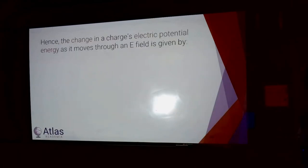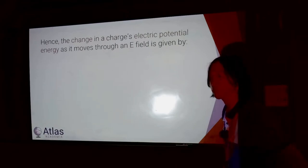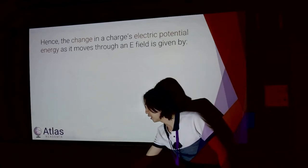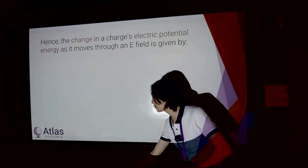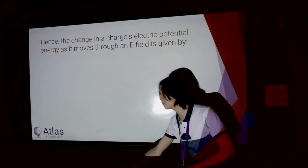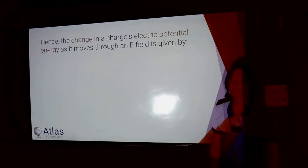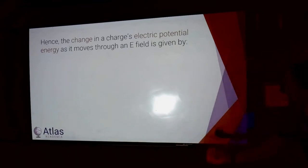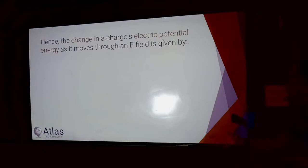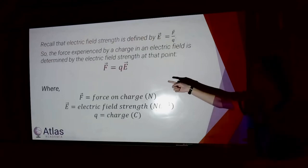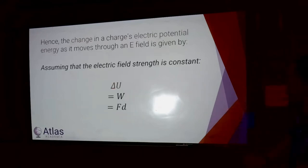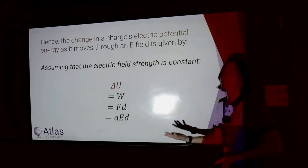Now, the change in a charge's electric potential energy as it moves through an E field — we talked about this before. As you move a mass in a gravitational field, you have to work against the gravitational field, so you're giving it GPE according to Mg times H. Well, in an electric field it's the exact same thing. If I have a charge Q and I try to give it electric potential energy by moving it against the field, the work done is the electric force times distance: F equals QE, so work equals Q times E times D.